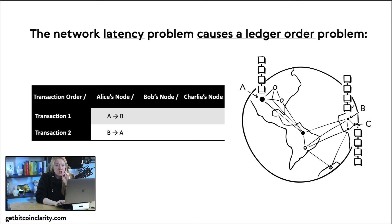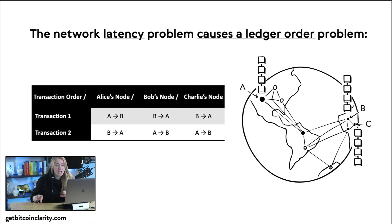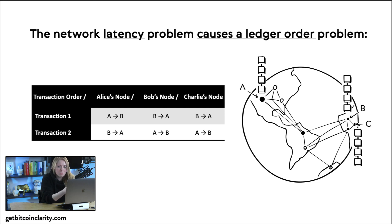Alice is making a transaction to Bob, and Bob is making a transaction to Alice — imagine they push send at the exact same time. From Alice's perspective, she sees her own transaction as having occurred before Bob's, because her network sees local transactions first. Bob sees the same thing in reverse — his transaction appears first. Charlie, who is Bob's neighbor, sees Bob's transaction before Alice's. This is a really big problem for a ledger that needs to be synchronized to the same state.